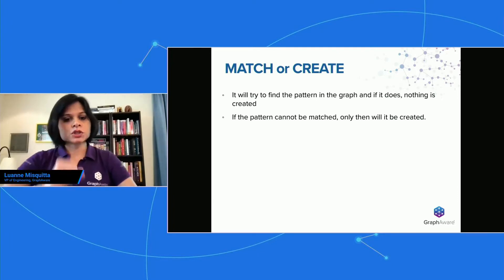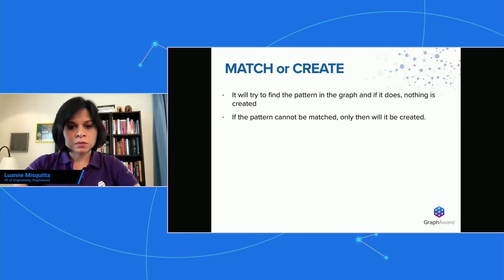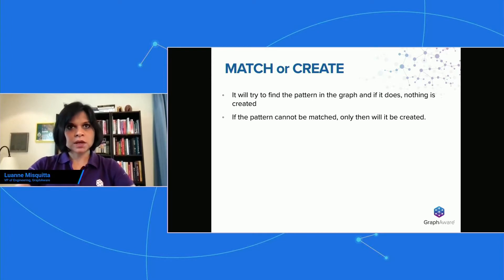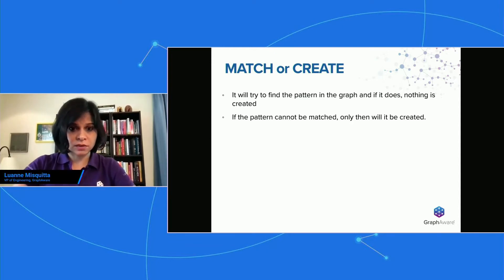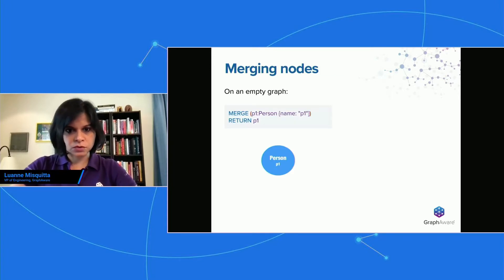So let's start with the match or create. What Merge does essentially is it first tries to match your pattern in the graph. If it finds it, that's it — we're done. If it doesn't find the pattern, then it's going to try and create the pattern — the entire pattern. I'm going to walk you through a couple of very basic examples before we get into the tricky ones.